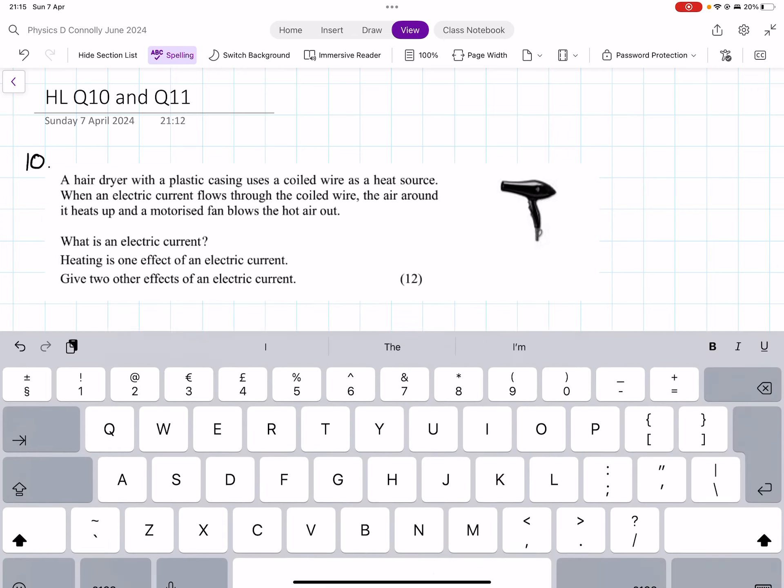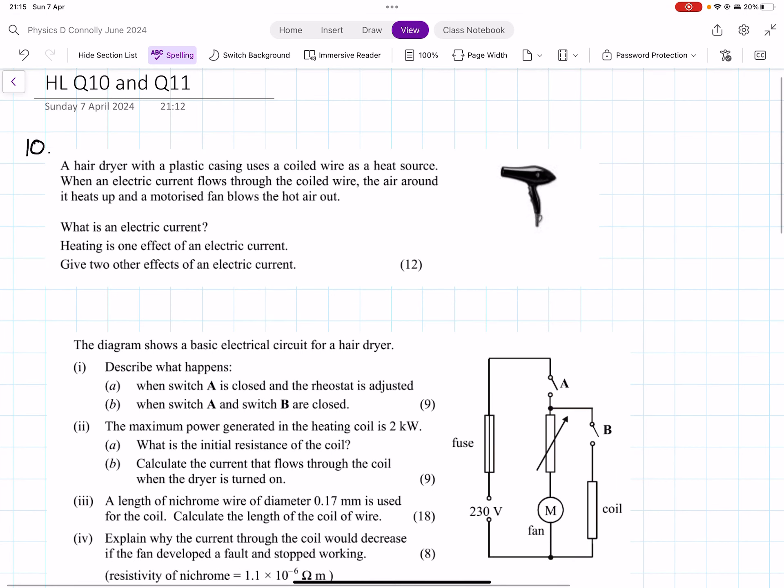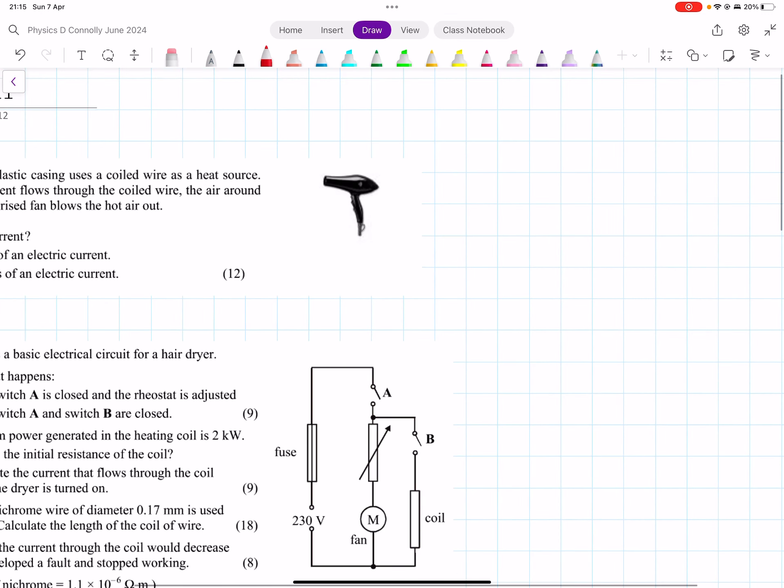So a hair dryer with a plastic casing uses a coiled wire as a heat source. When an electric current flows through the coiled wire, the air around it heats up and a motorized fan blows the hot air out. What is electric current?